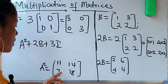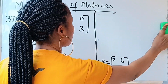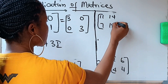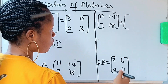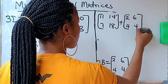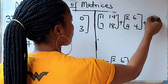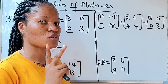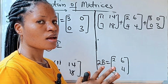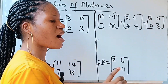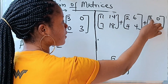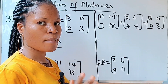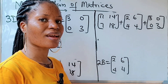Now let's add them together. A squared is [11, 14, 7, 18], plus 2B which is [2, 6, 4, 4], plus 3I which is [3, 0, 0, 3]. To add matrices, you add corresponding elements — elements occupying the same position. So: 11, 2, and 3 match; 14, 6, and 0 match; 7, 4, and 0 match; 18, 4, and 3 match.